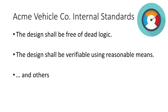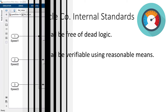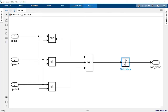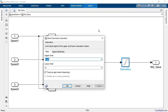My team has strict design for verifiability standards, meaning that the designs should be free of dead logic and relatively easy to completely test. The model from the legacy vehicle program includes a saturation block on the selected signal due to an older defensive programming approach. If a signal's value cannot be greater than or less than the upper and lower saturation values, then the saturation block is dead logic.